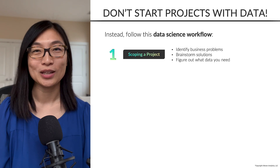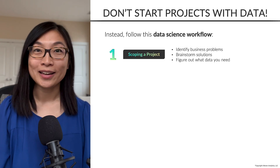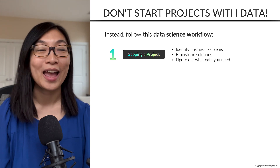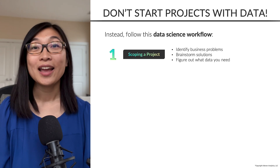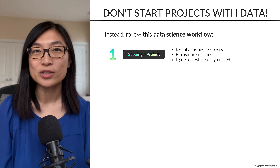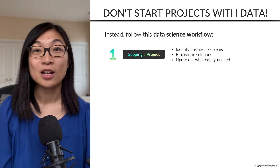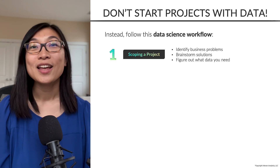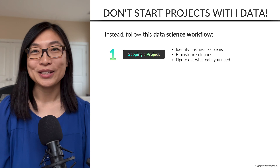After figuring out your business problem and brainstorming solutions, the next step is to figure out what data you need. With data, I always start by thinking 'pie in the sky' — think about what the ideal scenario would be if you could get any data you wanted, then start getting more realistic. If you start with the data you have, you'll be limited, but if you think big, you can get much more creative and use some novel data sets.